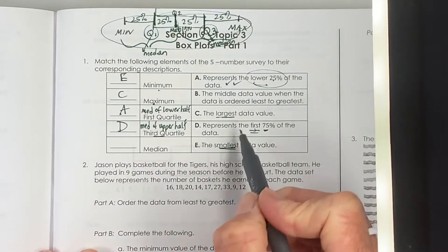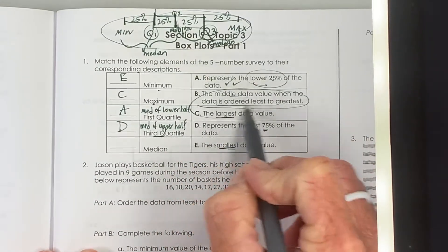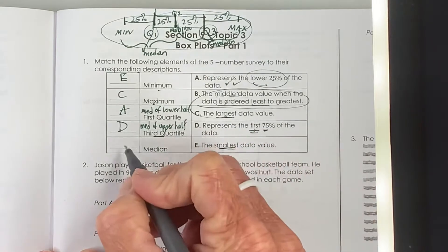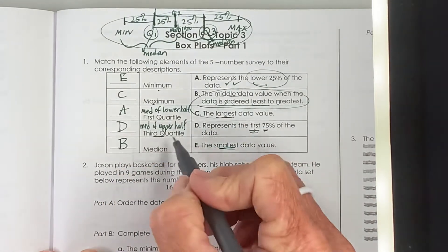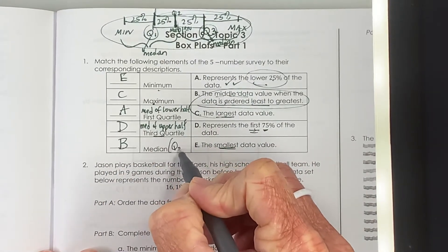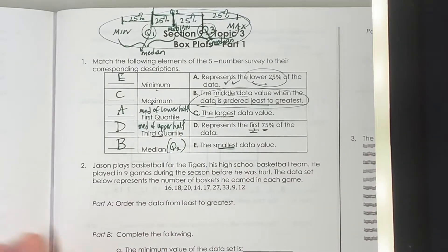So then by default, the middle value of the data, when it's in order least to greatest, that's our overall median. It's also actually technically quartile two there in the middle.